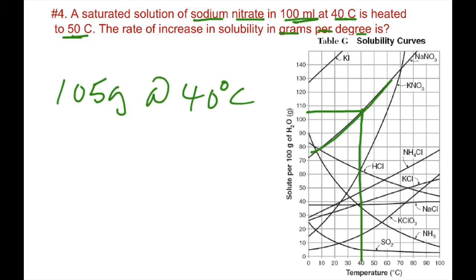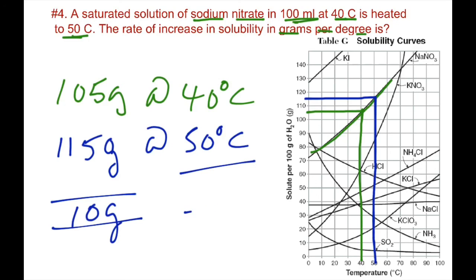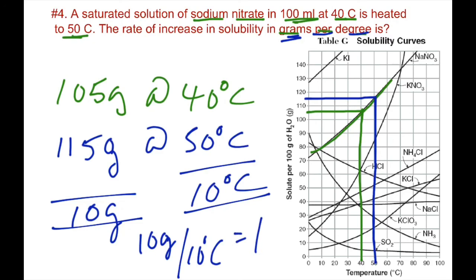Then we find 50 degrees, go up to the NaNO3 line, move across, and read approximately 115 grams at 50 degrees C. The difference in grams is 115 minus 105 equals 10 grams. The difference in temperature is 10 degrees C. For grams per degree C, divide: 10 grams divided by 10 degrees C equals 1 gram per degree C. That's your answer.